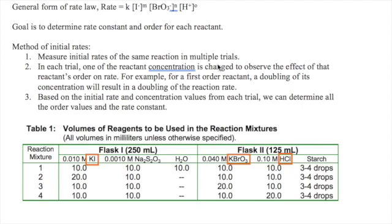Two, in each trial we change one of the reactant's concentration to see what effect that has on the reaction rate. For example, if the rate is doubled when the reactant concentration is doubled, then the reactant must be first order.